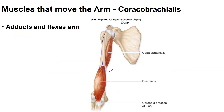The coracobrachialis is a very deep muscle that works as a synergist to the pectoralis major for flexion and adduction of the arm. It gets its name from its attachment at the coracoid process of the scapula and within the brachial region, or within the humerus.